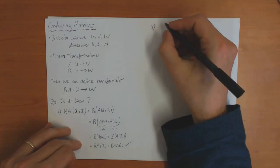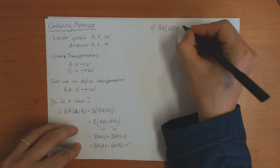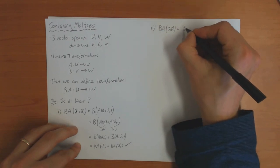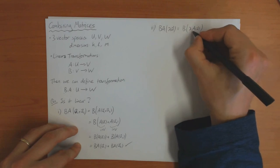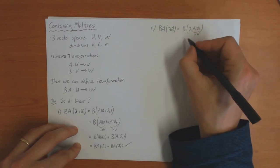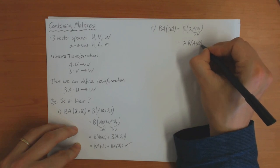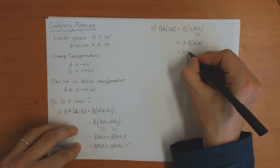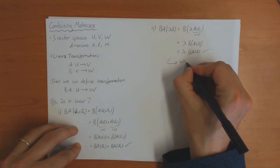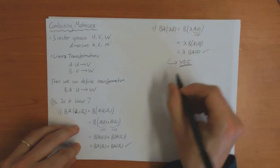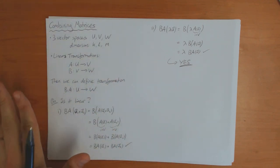The second axiom: BA applied to lambda times vector U. First, A is linear, so you can write this as B applied to lambda·A(U). And A(U) is some vector in V. But then B is linear, so this is lambda times B(A(U)), which is lambda times BA(U). So that one also checks out. The answer is yes — we can combine two linear transformations and the result is another linear transformation.